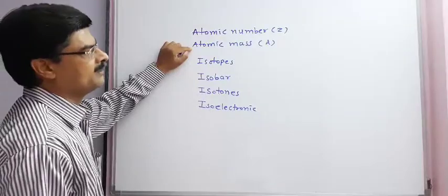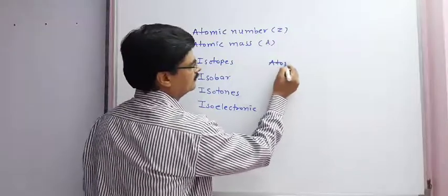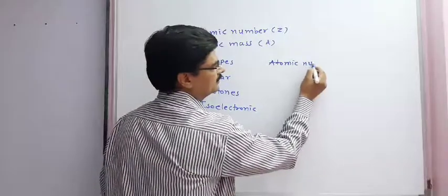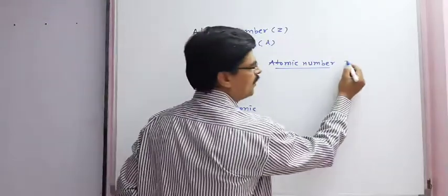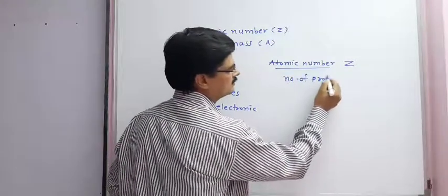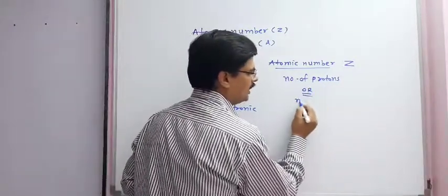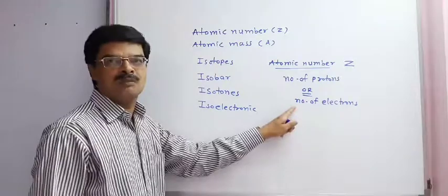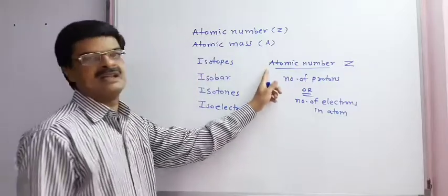First we understand atomic number. Atomic number is denoted by symbol Z, and it is the number of protons or number of electrons present in an atom, known as atomic number Z.